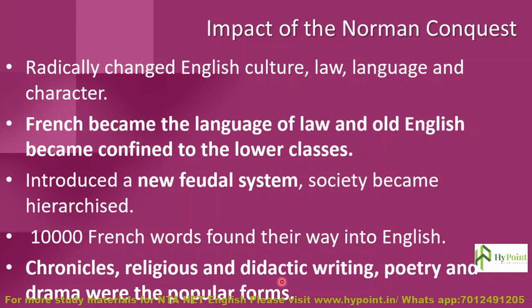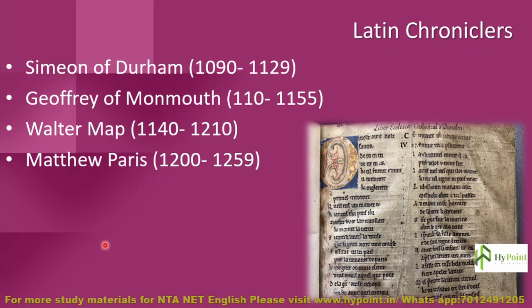Chronicles, religious and didactic writing, poetry, and drama were the popular literary forms of the Anglo-Norman period. Chronicles were mainly written in Latin — not in English. We could see very little or no literary production in the English language. Literature was mainly written in Anglo-Norman or Latin or other classical languages.